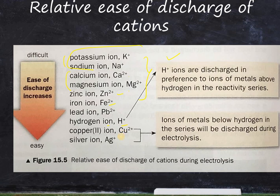Metals below hydrogen in the reactivity series — such as copper — can be discharged during electrolysis in preference to hydrogen. This table helps you determine whether hydrogen or the metal will be discharged first in an aqueous solution.